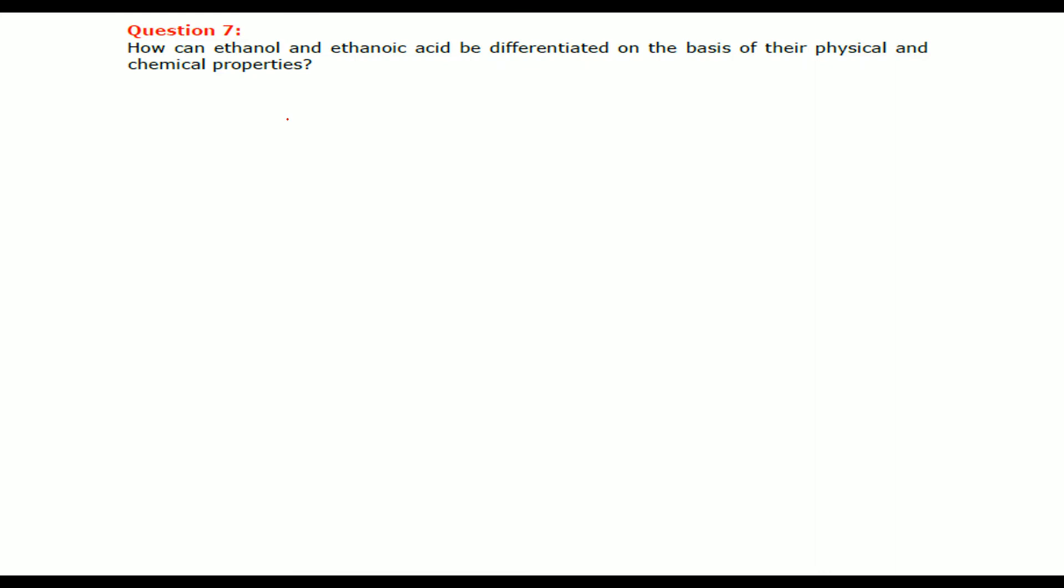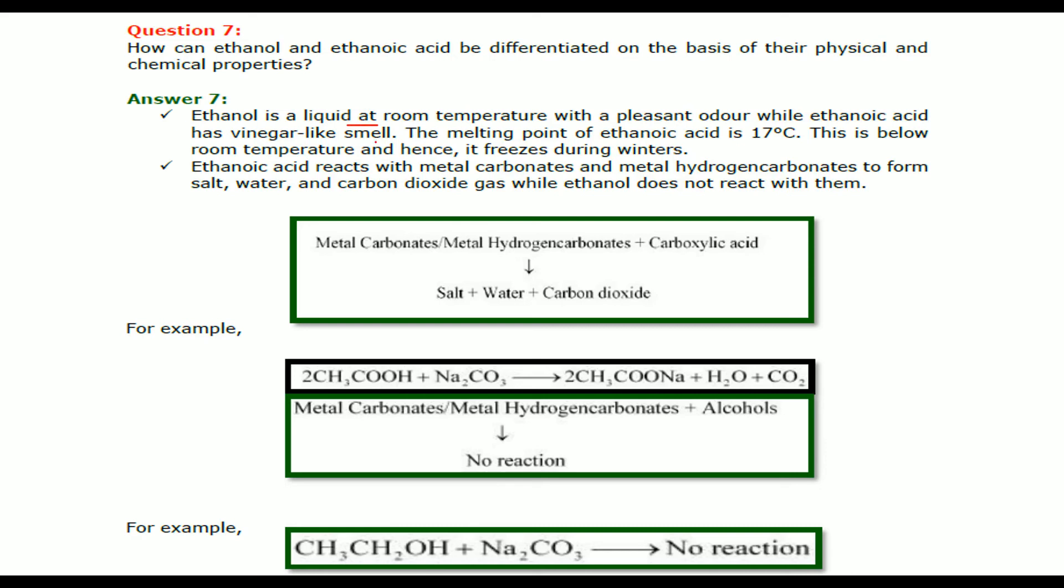How can ethanol and ethanoic acid be differentiated on the basis of their physical and chemical properties? First is ethanol is liquid at room temperature. It has a very pleasant odor. When we talk about ethanoic acid, it has a vinegar like smell. The melting point of this ethanoic acid is 17 degree centigrade. That means it is below room temperature. So in winters it is going to freeze. Ethanoic acid reacts with metal carbonates and metal hydrogen carbonates to form salt, water and carbon dioxide. As you see here. It combines with metal carbonates and metal hydro carbonates. This carboxylic acid. This is exactly this one. So carboxylic acid is combining with either of these and it will form salt, water and carbon dioxide.